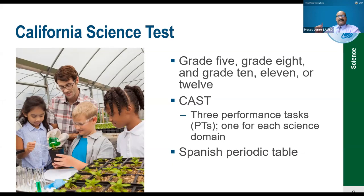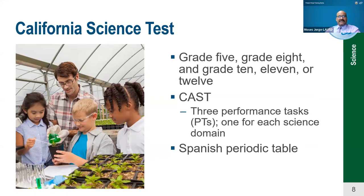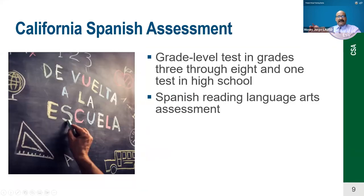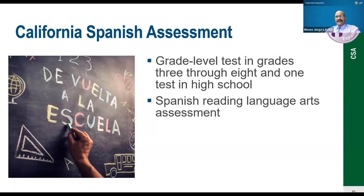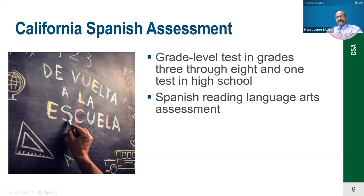The California Spanish Assessment (CSA) is a Spanish reading language arts assessment that measures a student's literacy in Spanish reading language arts and provides student-level data in Spanish literacy. The targeted test-taking population consists of students in grades 3 through 8 and high school students receiving instruction in Spanish. There are no new updates to report on this assessment.